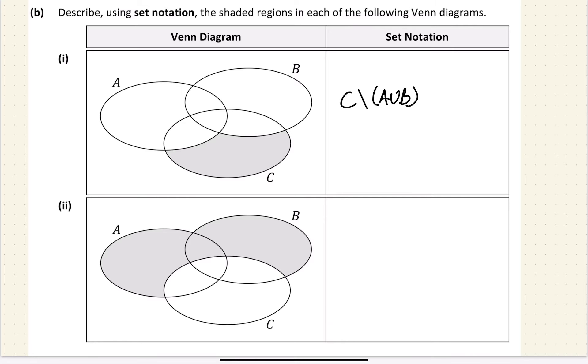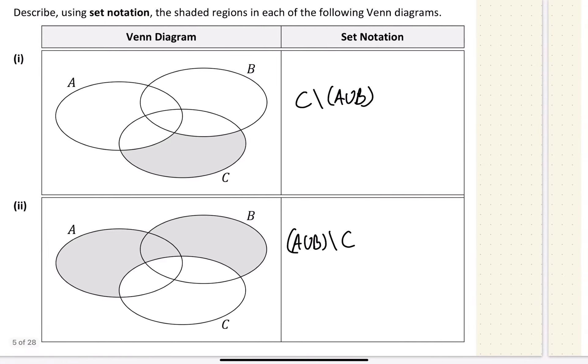Part two: A and B are partially shaded, but it is missing C. So I would say that is A union B less C. So C is taken away from A union B.